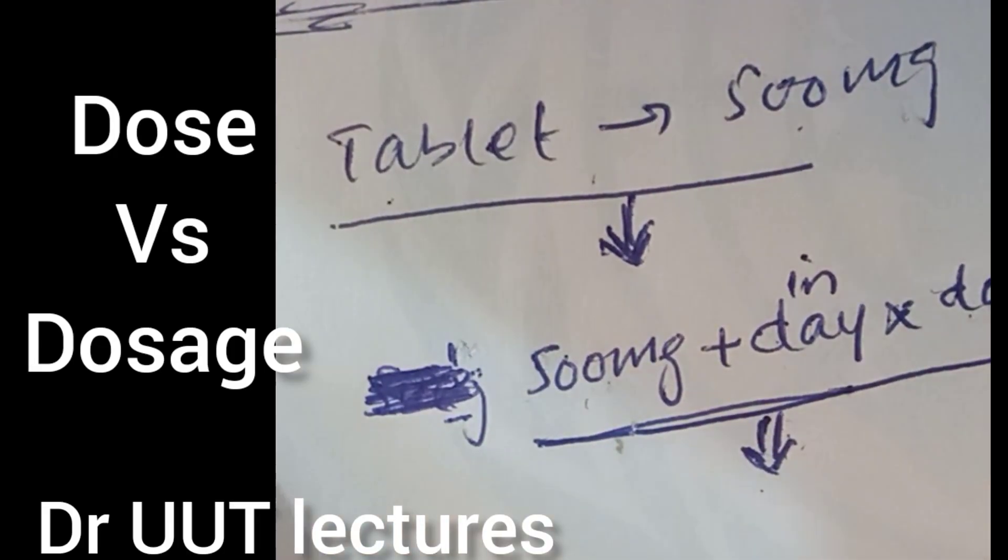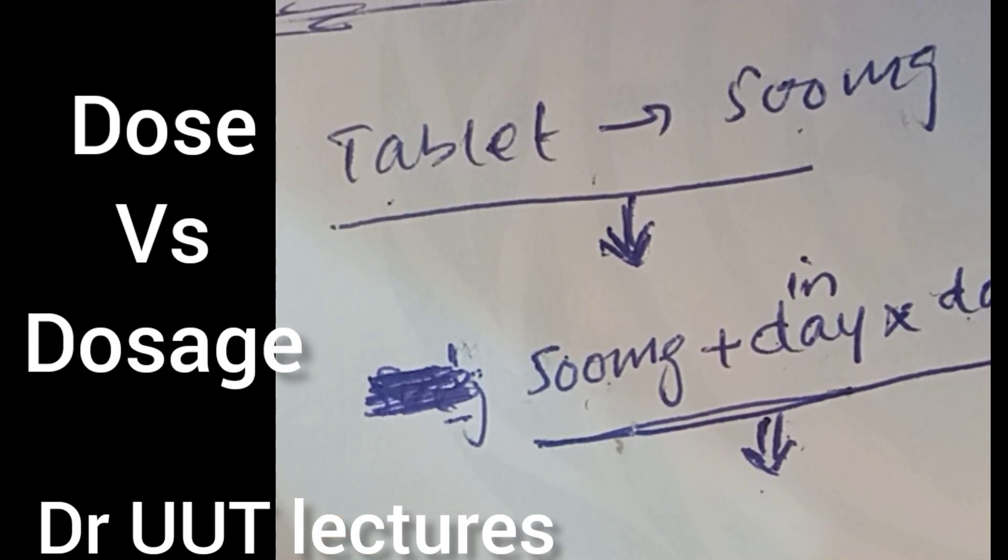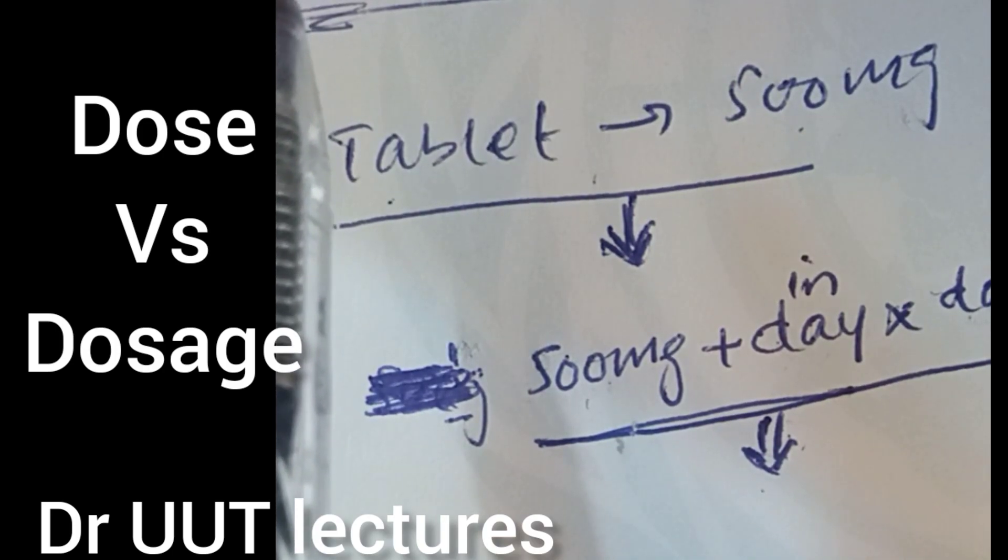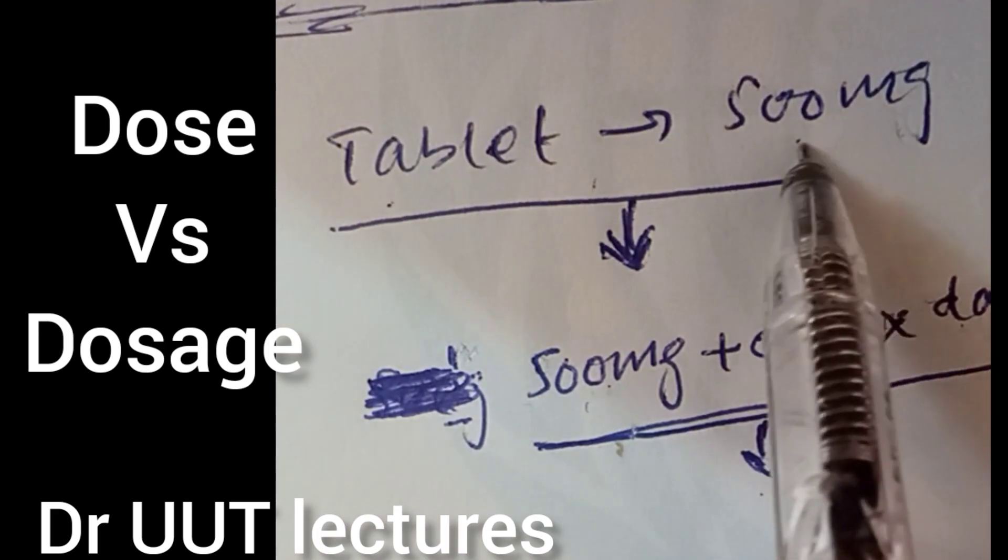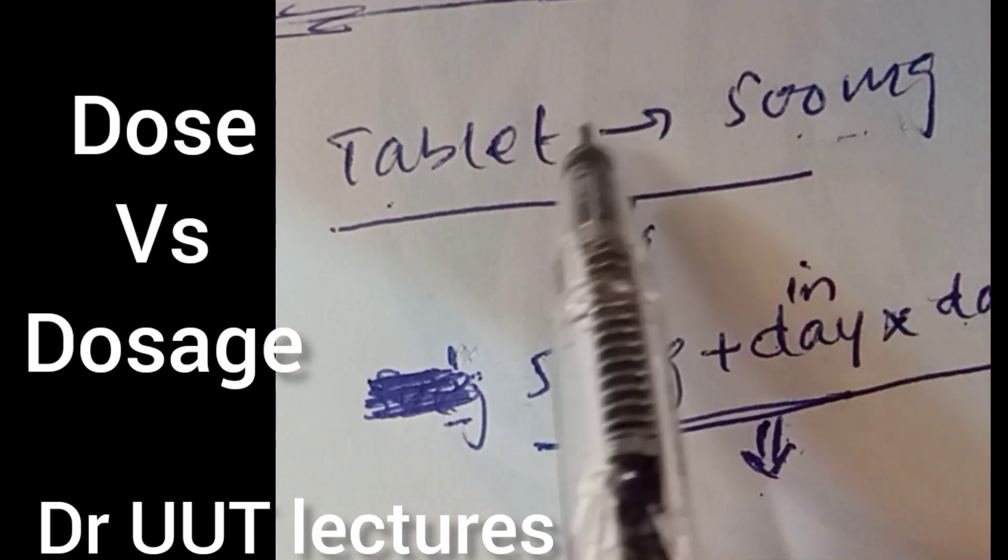Assalamualaikum and welcome to Dr. UUT Lectures. The point of today's discussion is the difference between dose and dosage. Very simple: if you take a tablet and you see 500 mg written on it, this tablet that you are taking is the dose.